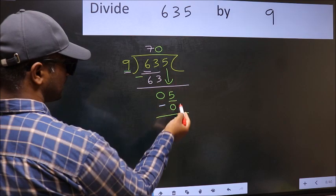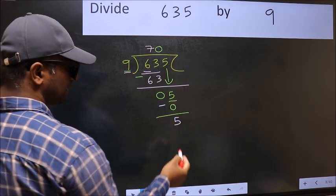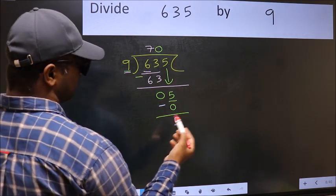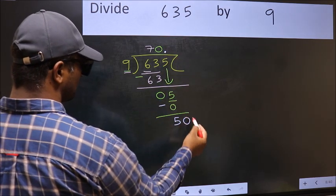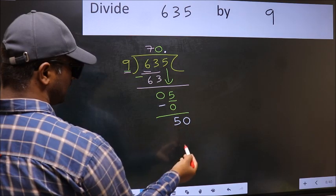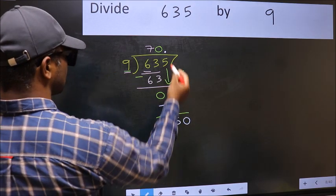So now you can put the decimal point and take 0, giving us 50. A number close to 50 in the 9 table is 9 times 5 equals 45.